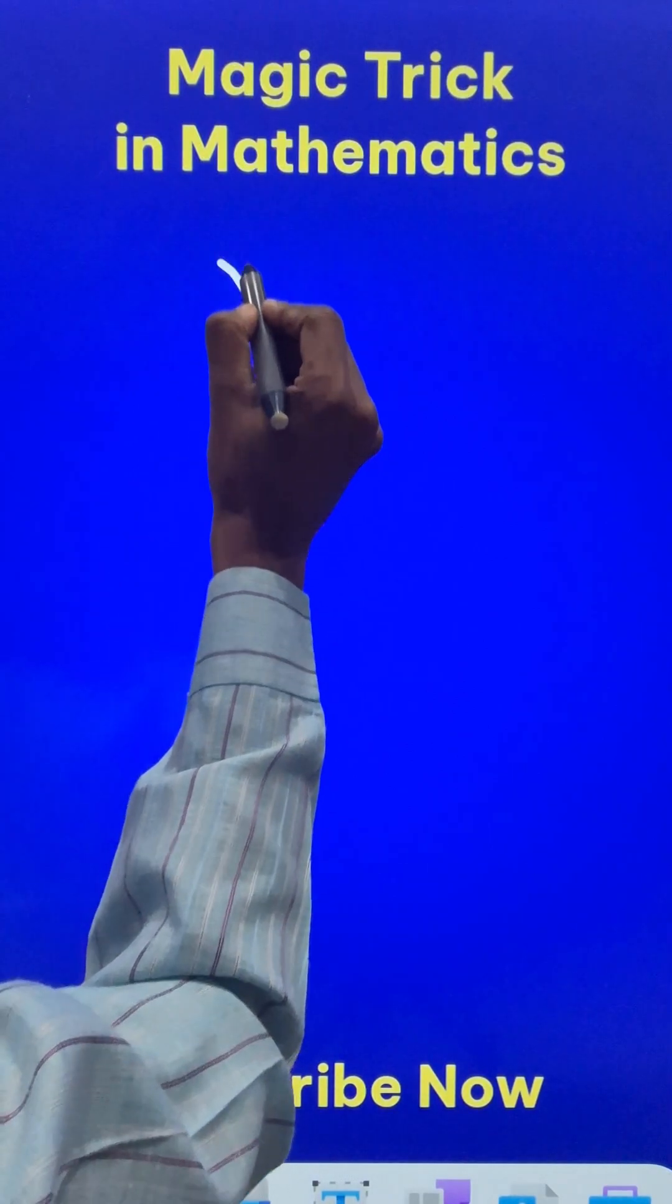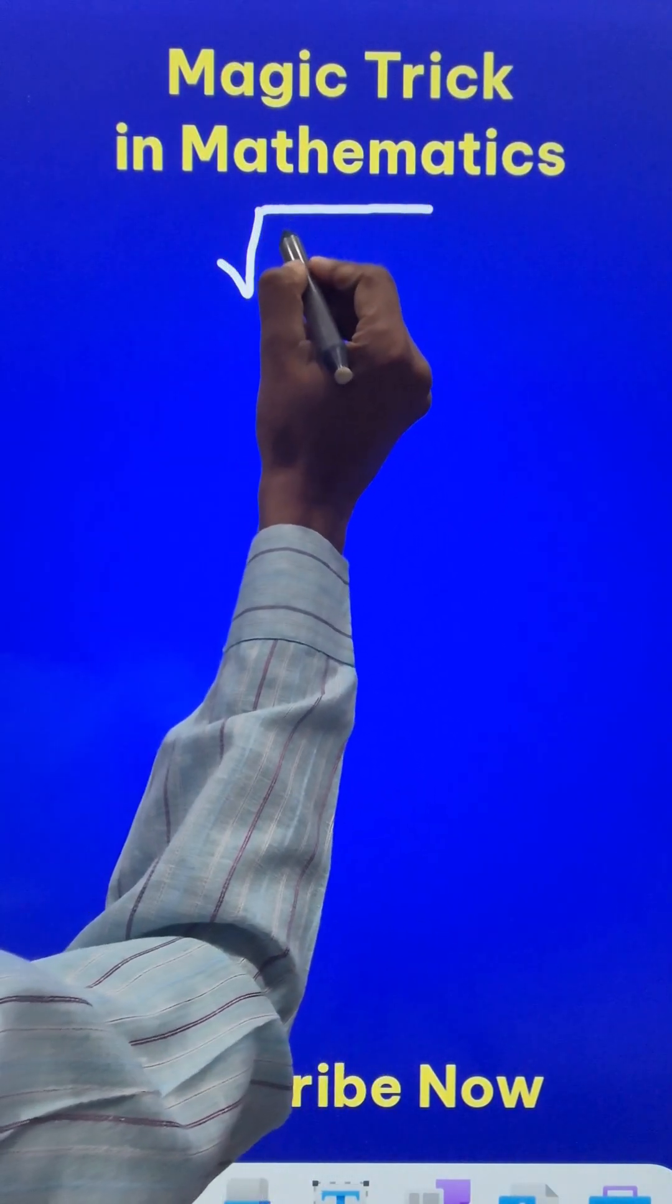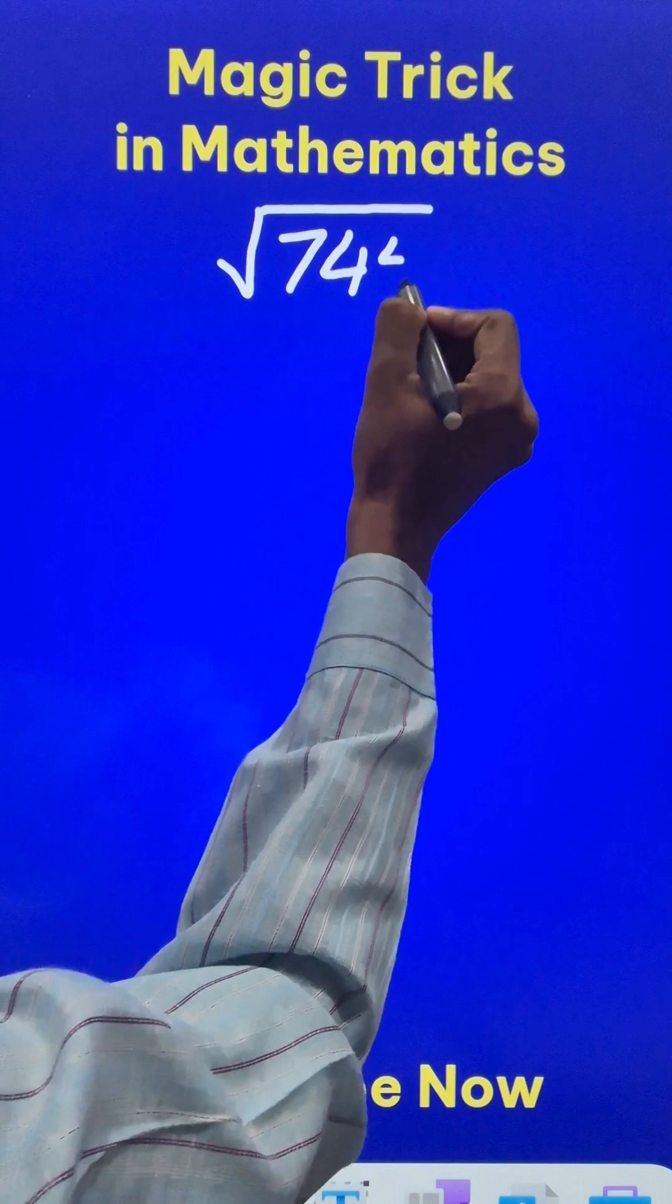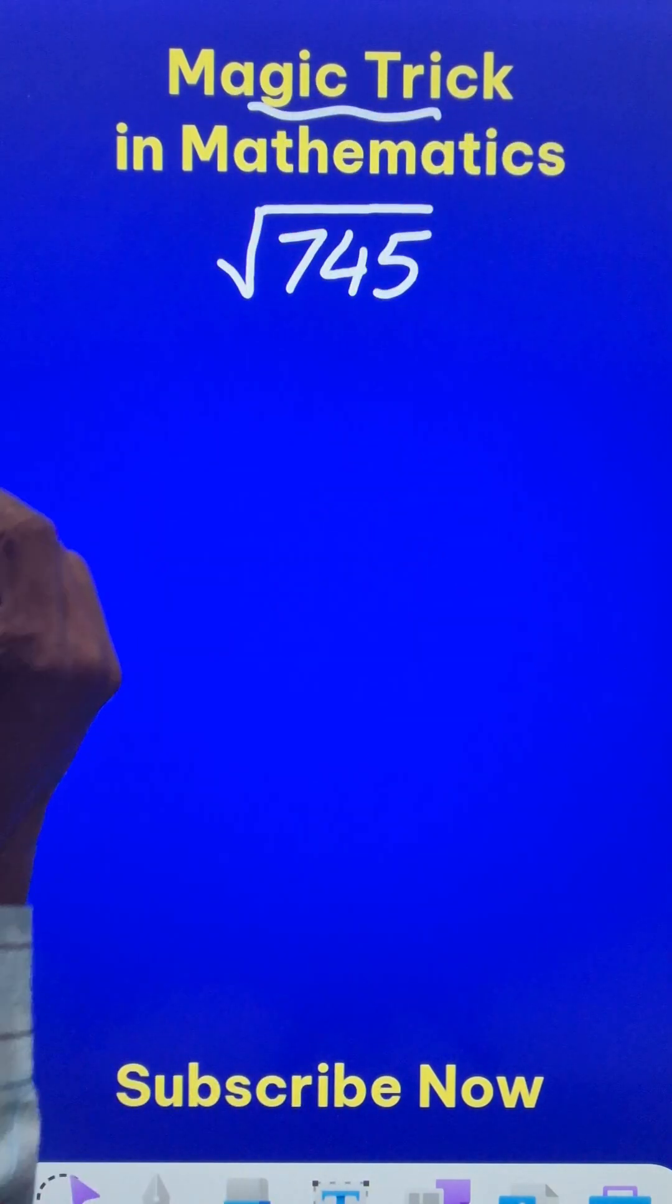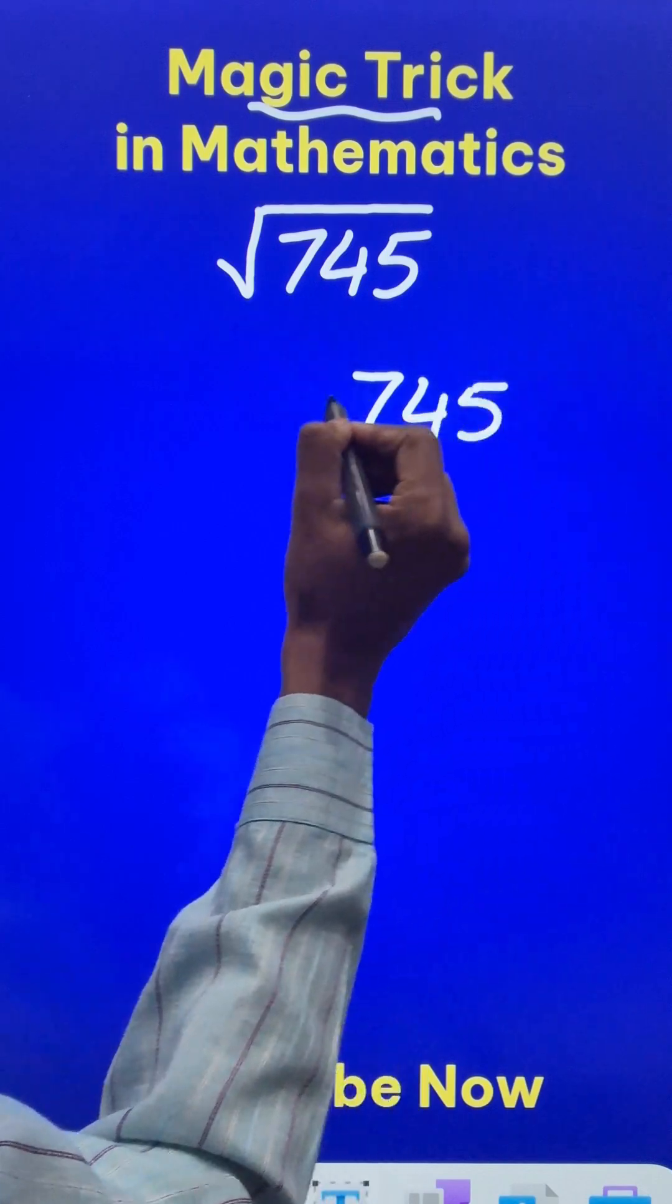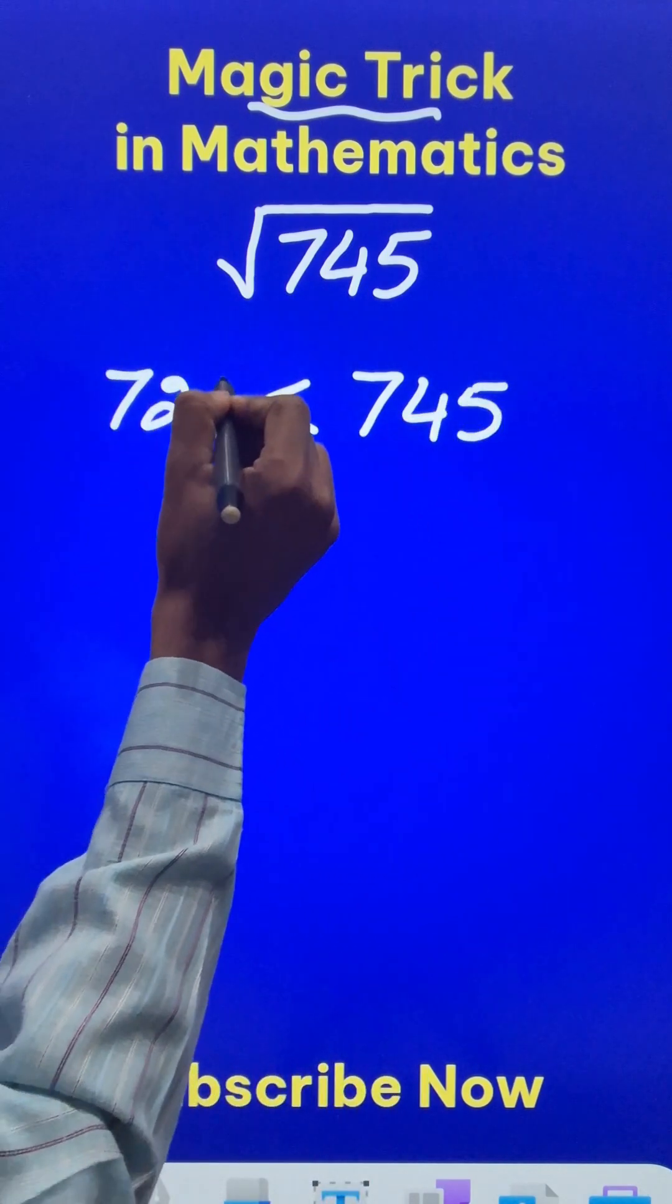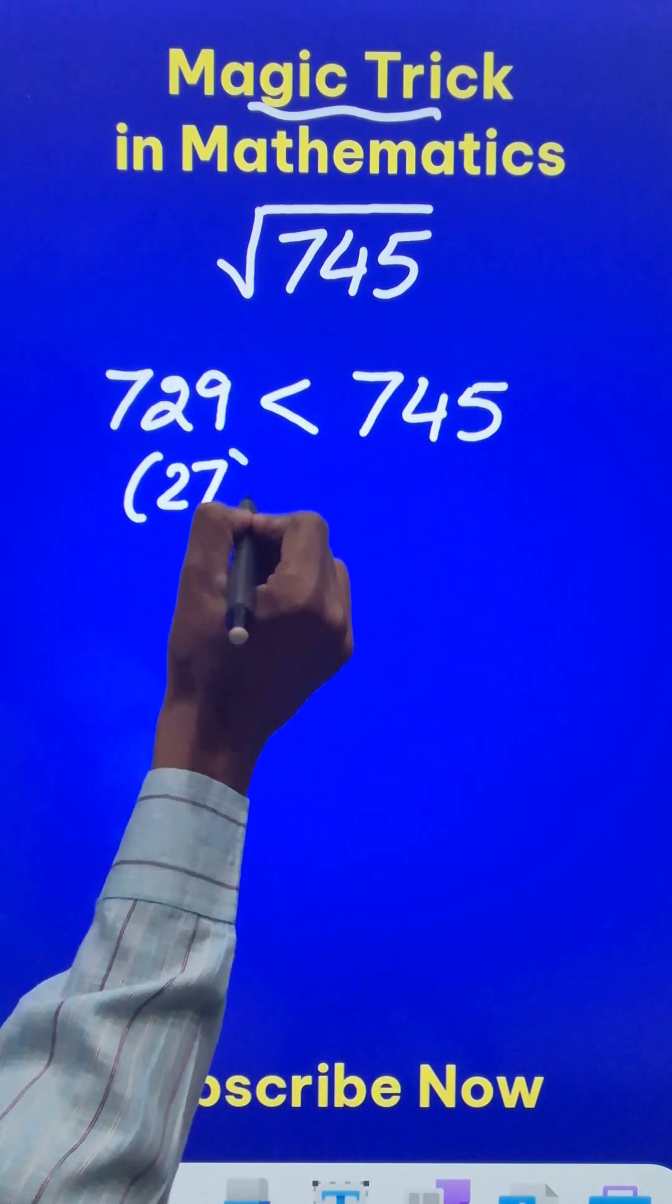Let us calculate the square root of an imperfect square number like 745 using this magic trick in mathematics. Now I know that 745 is very close to 729, which happens to be 27 squared.